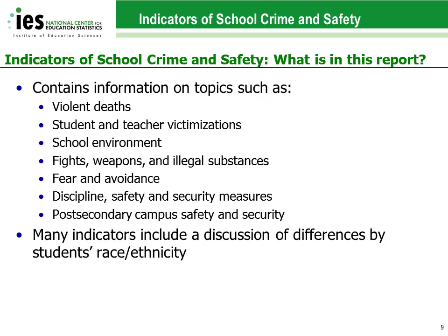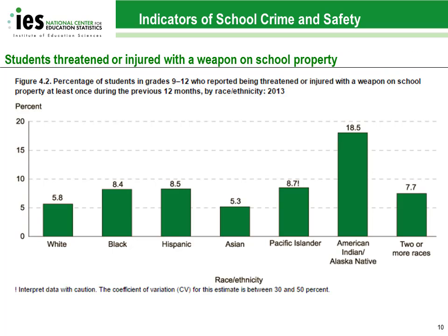Our annual report, Indicators of School Crime and Safety, contains 23 indicators covering a wide range of topics related to school crime and safety in the United States. Many of these indicators present differences by students' race and ethnicity. This figure shows that a greater percentage of American Indian and Alaska Native students reported that they were threatened or injured with a weapon compared to students of other racial and ethnic groups. The note on the Pacific Islander bar indicates that data for this group should be interpreted with caution due to larger amounts of error, likely due to a small sample size.